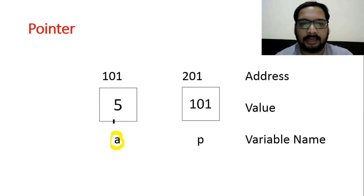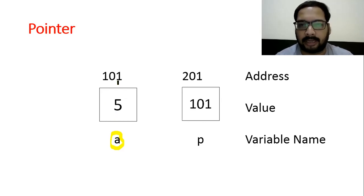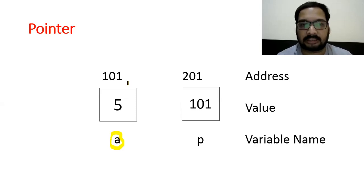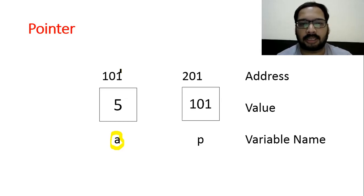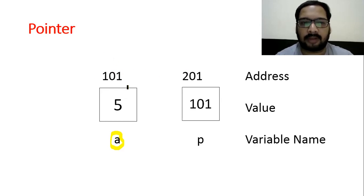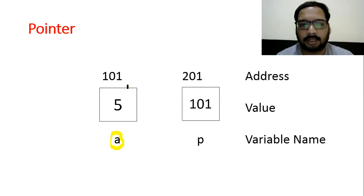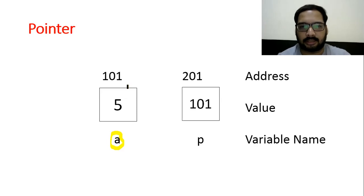For int: on a 16-bit compiler it is 2 bytes, so addresses would be 101 and 102. On a 32-bit compiler, it is 4 bytes, so it would be 101, 102, 103, 104. I have mentioned only the beginning address, which we call the base address. The actual address you get will be different each time you run the program — this is just an assumption for the diagram.